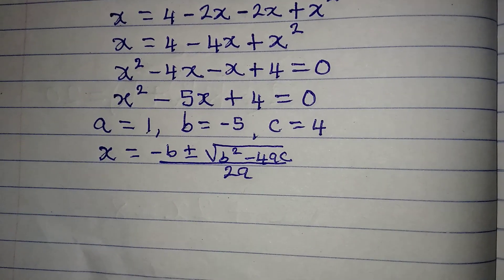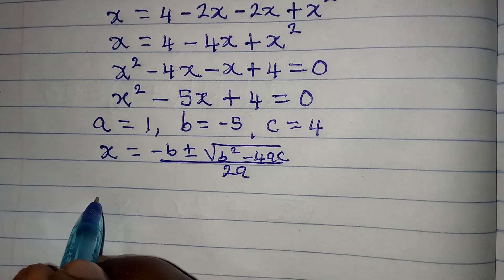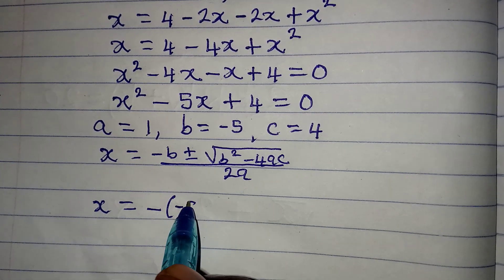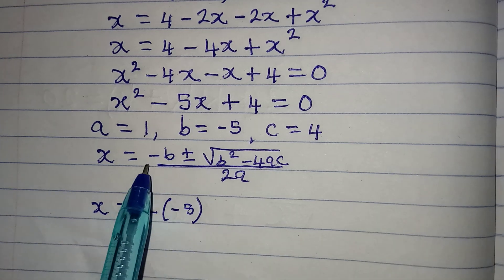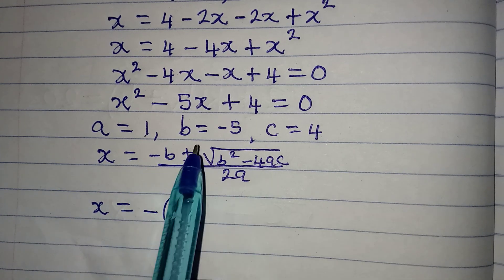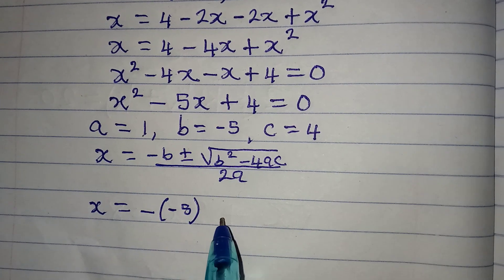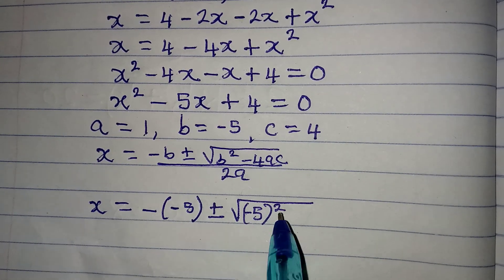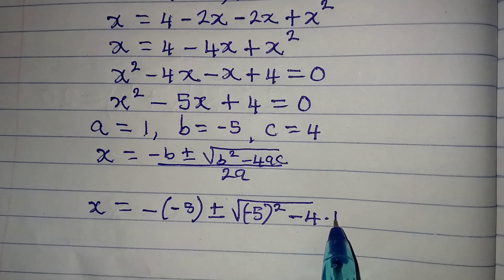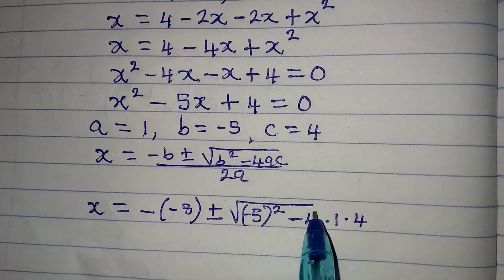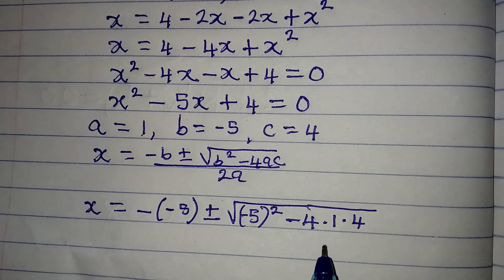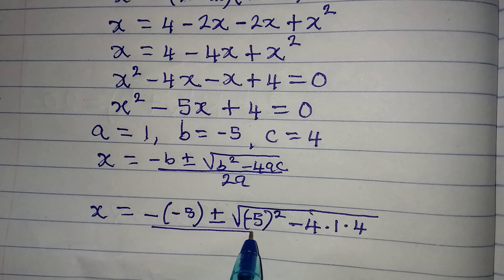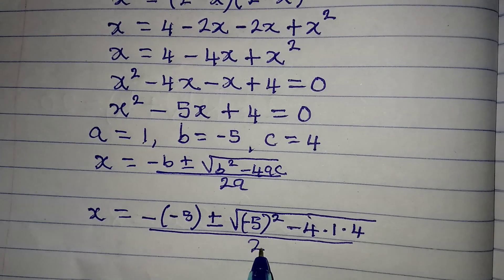Substituting into the formula: x equals negative of (minus 5), plus or minus square root of (minus 5) squared minus 4 times 1 times 4, all over 2 times 1, which is 2.